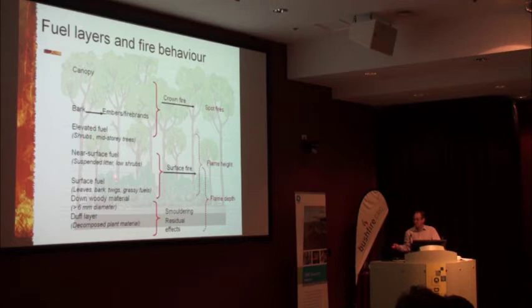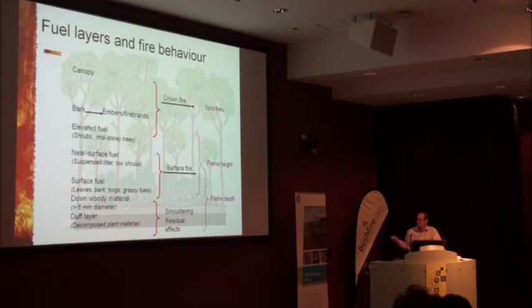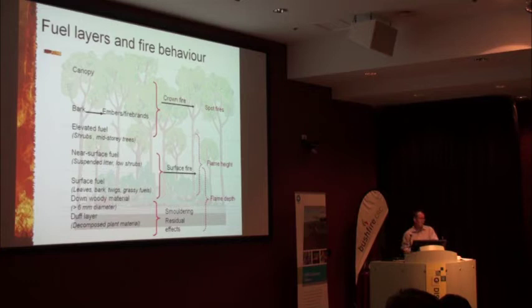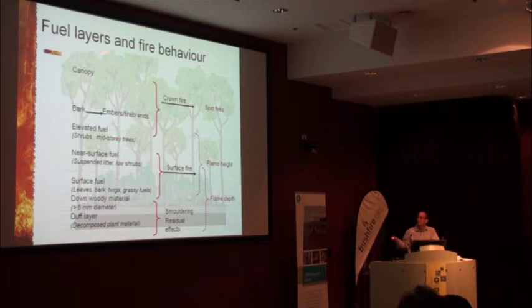If we think about the bark layer, that's very important in providing both a ladder fuel that will carry flames into the canopy, and also it provides the bulk of the embers and firebrands that contribute to the spotting process. The elevated fuel — comprised by tall shrubs and mid-storey trees — is very important because it adds to flame height and acts again as a ladder to lift the fuel into the higher layers, possibly connecting with smaller trees and eventually into the canopy of the forest itself.